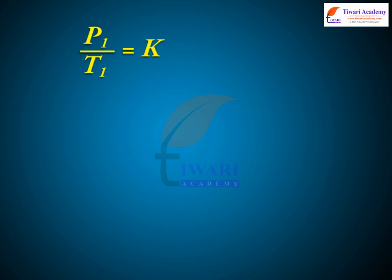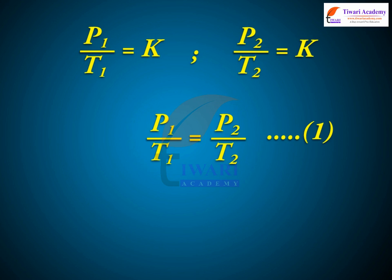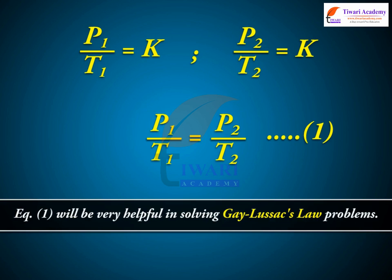We know that P1 divided by T1 is equal to K, and we know that P2 divided by T2 is equal to K. We can conclude that P1 divided by T1 is equal to P2 divided by T2. This equation will be very helpful in solving Gay-Lussac's Law problems.